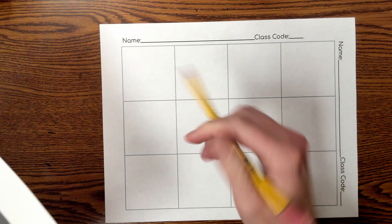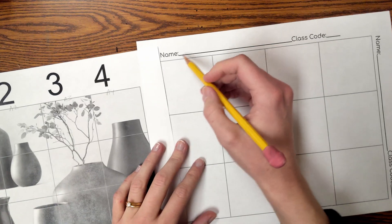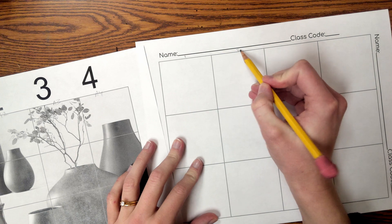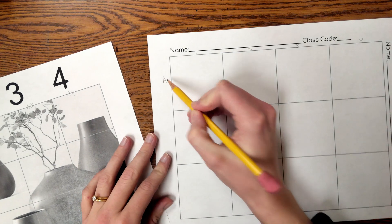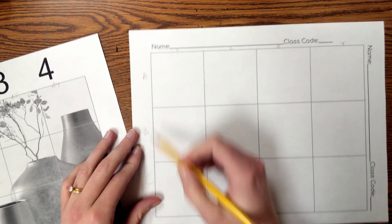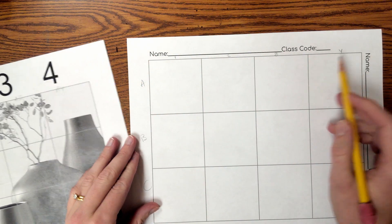I recommend you start out by labeling those grid squares on your own paper, so it's easier to keep track of what part of the drawing that you are on. So I'm labeling my rows and my columns.